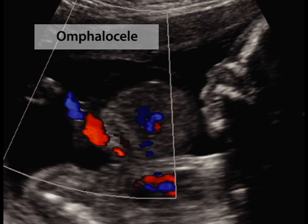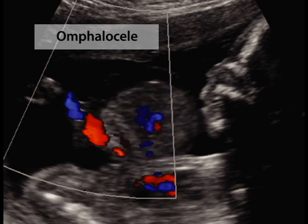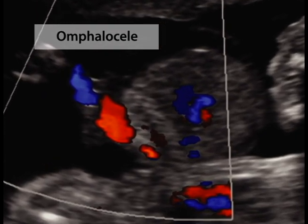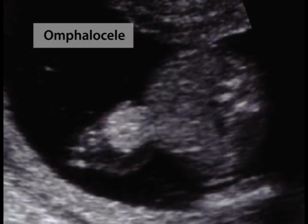Because abdominal organs herniate into the umbilical cord, they are covered by amnion and peritoneum, which gives the fetal omphalocele a round, sac-like appearance. The cord, highlighted here with color Doppler, inserts directly into the omphalocele sac. This fetus has a small omphalocele highlighted here.